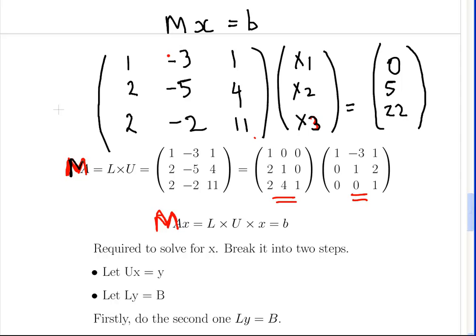So what we've done in the last video is we found that M, if we use LU decomposition, we can write it as the product of these two matrices L and U. So what we could say is that mx is equal to L times U times x and that is equal to b.